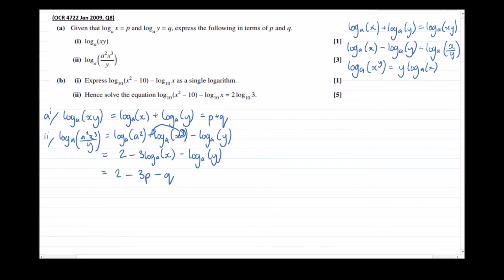Part b, part one: express log to the base 10 of x squared minus 10, minus log to the base 10 of x, as a single logarithm. Notice we've got a subtraction here, so that causes a division within the logarithm. Using the subtraction rule, that becomes log to the base 10 of (x squared minus 10) over x. That's the one mark gained from b part one.